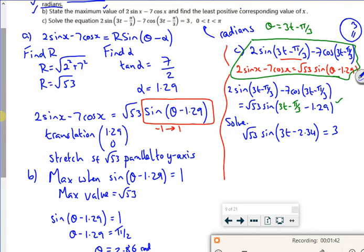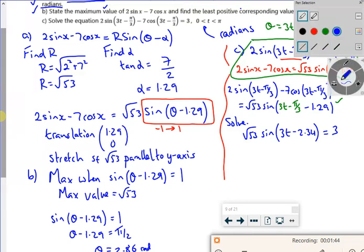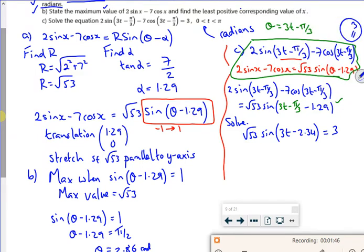So now, oh I've done it again. Make it fit a line. So now if I divide 3 by the root 53.